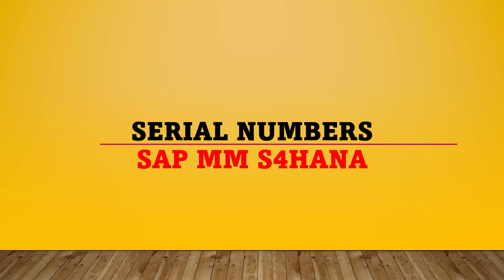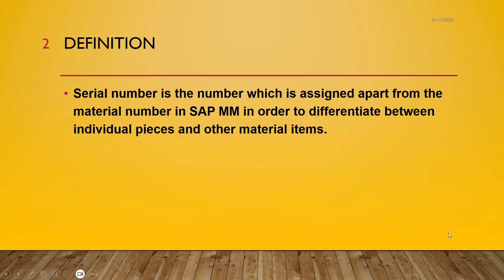Hello everybody, Swamina here. Today we are going to see serial numbers in SAP MM. What is a serial number? It is a number associated with the material — with each individual piece. Each and every piece has a number associated with it, apart from the material master number. Serial number is a number assigned apart from the material number in SAP MM in order to differentiate between individual pieces and other material items.